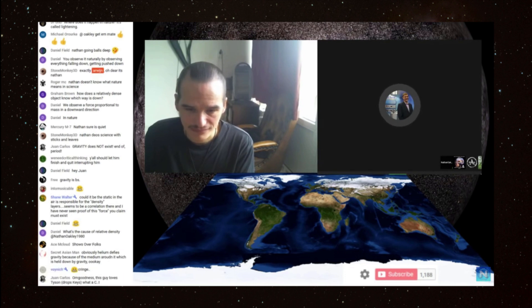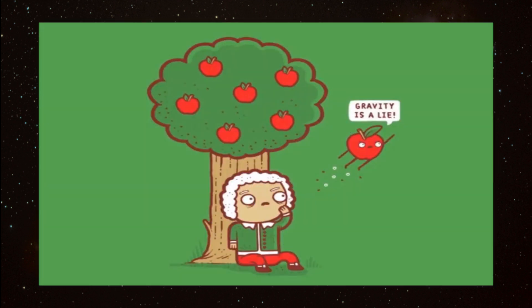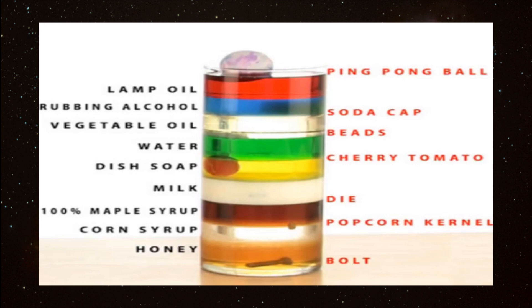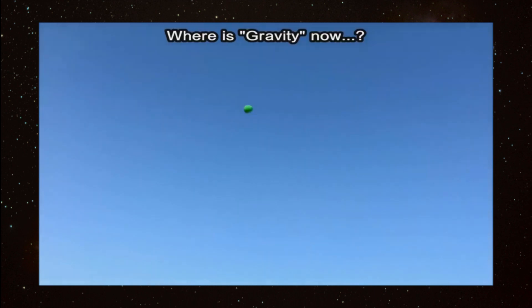Long before the theory of gravity was a glimmer in Newton's imagination, the natural physics of density and buoyancy already perfectly explained why apples fall down. Quite simply, objects fall or rise based on their relative density to the medium surrounding them. Apples fall because they are denser than the air, while helium balloons rise because they are lighter. No gravity necessary.